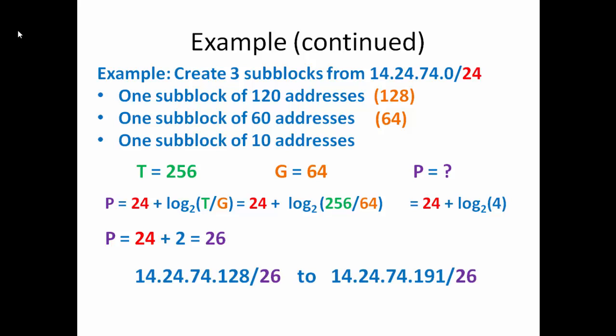So our starting address for this block is going to be 14.24.74.128/26. 128 is 1 up from 127. Then we'll count up 64 addresses and we end at 14.24.74.191/26. So that is our address range for that block of addresses.